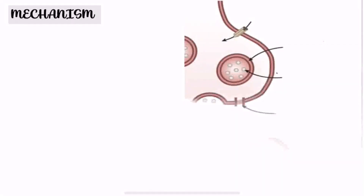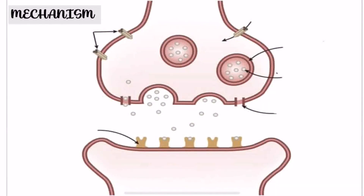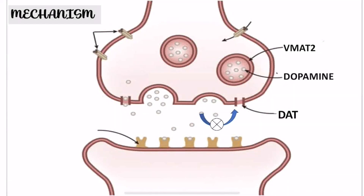Moving towards the mechanism: Amphetamine is transported by monoamine reuptake transporters. Amphetamine inhibits VMAT2, which stores dopamine in vesicles, so more dopamine is released into the synapse. Amphetamine also inhibits the reuptake of dopamine through DAT phosphorylation.